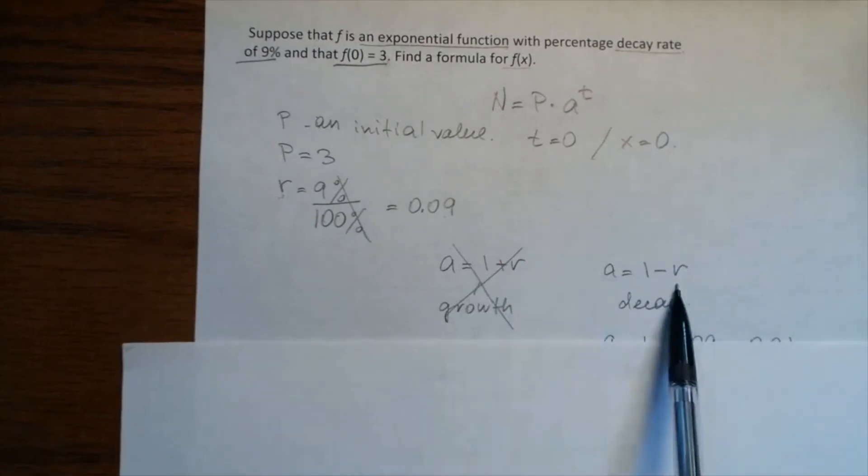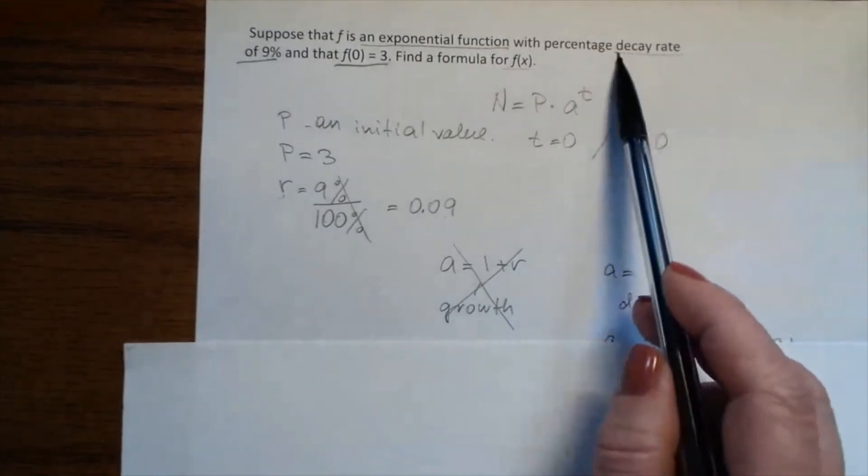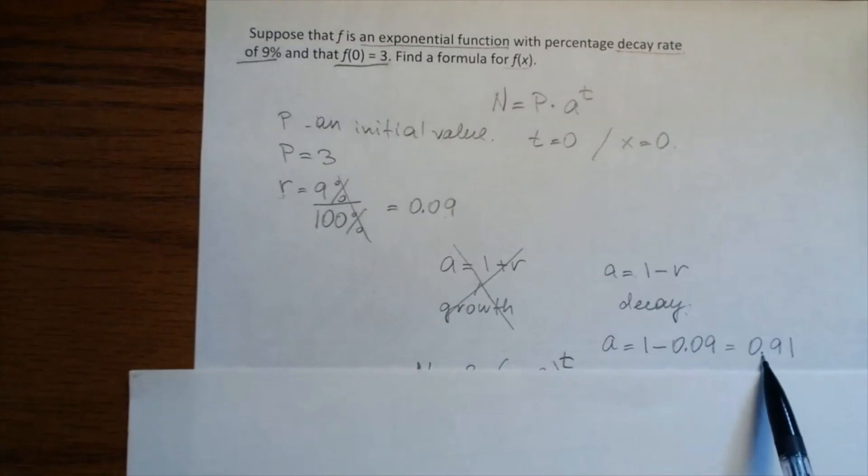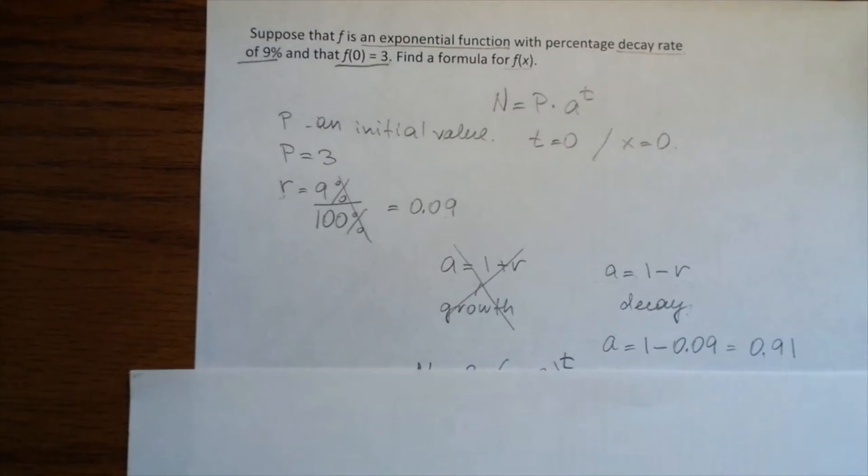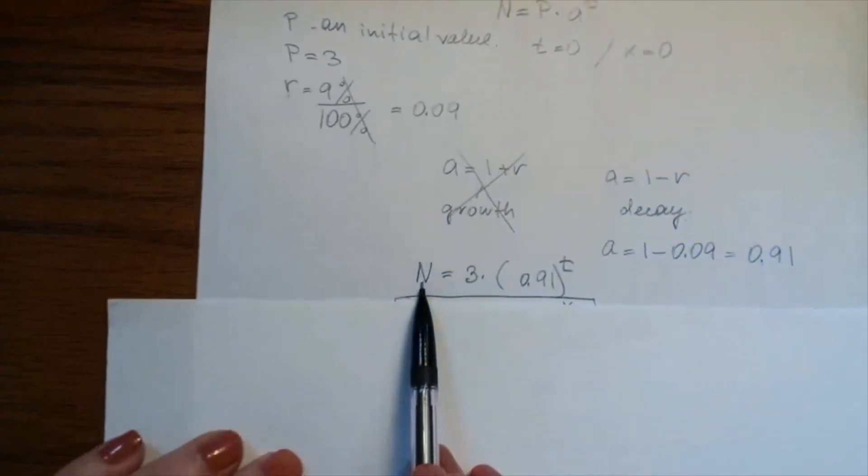Because we have two formulas for a, we need to read carefully. We're talking about decay rate, so we use a = 1 - r. Substitute 0.09 for r, and we get a = 0.91. Now substitute everything into the equation: N = 3 × (0.91)^t.